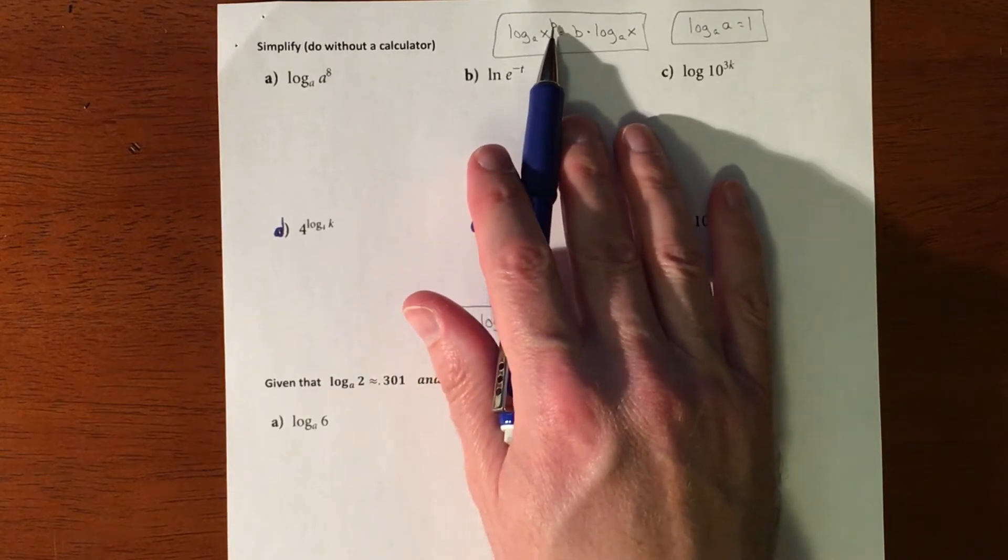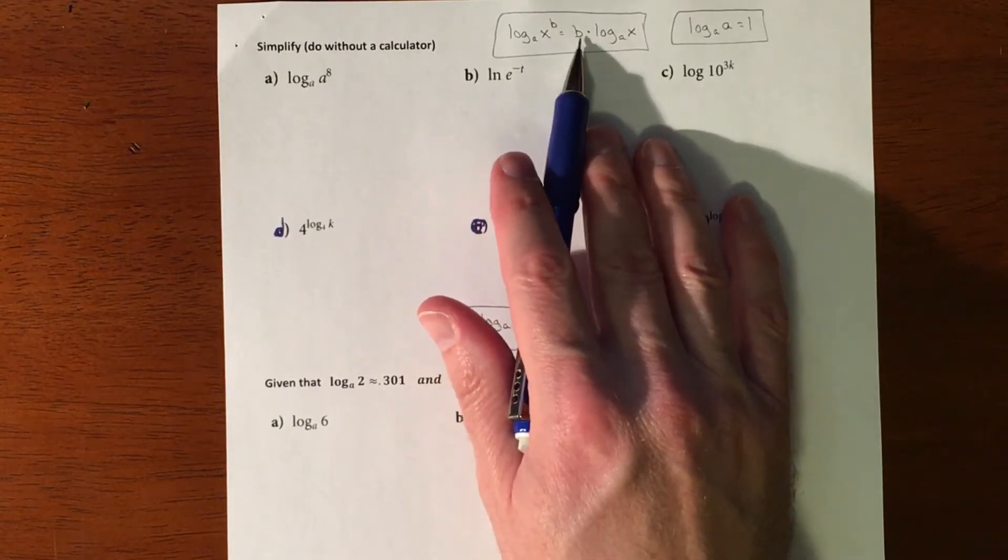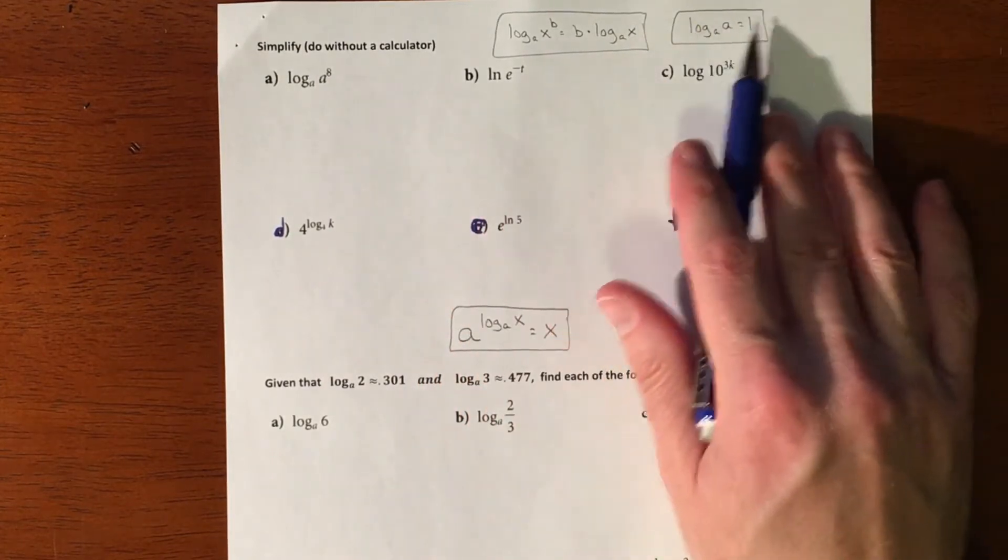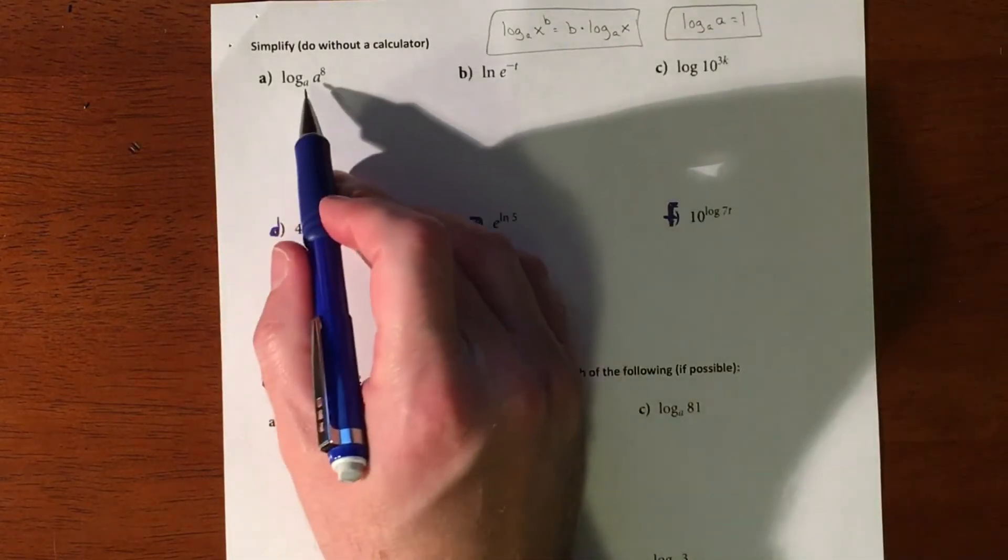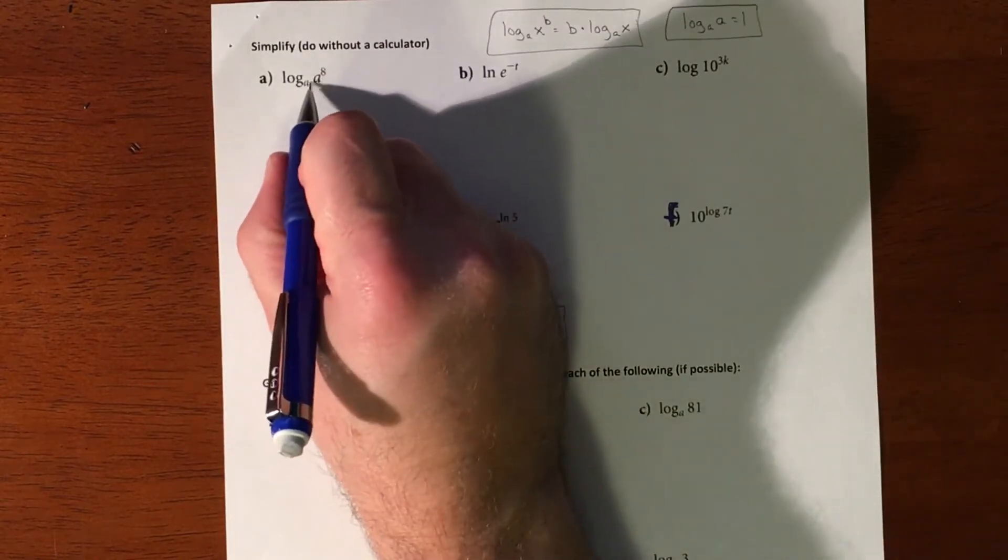Logs don't keep exponents, so if you have an exponent on a log you can always pull it in front and it's going to multiply to it. And then the other one is that if the base matches the number, then it's going to equal one. So these should go really quick because it's not a coincidence that those match.